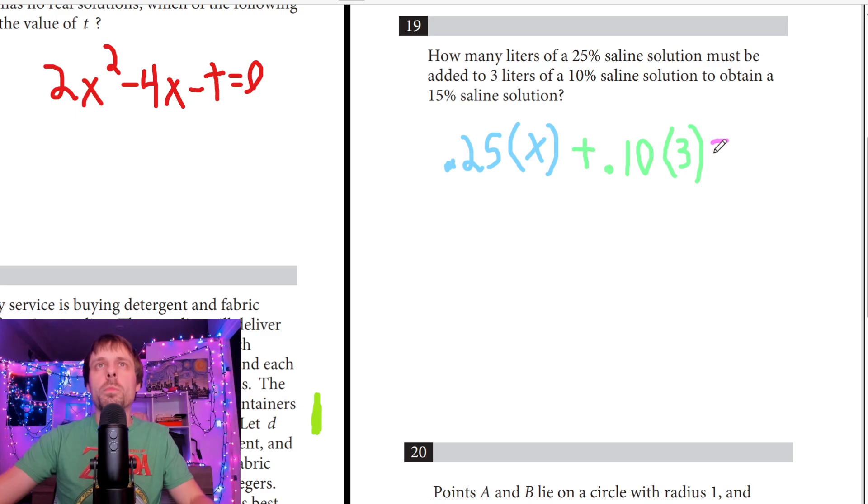And to obtain a 15% solution. So this is the tricky part. Obtain equals. But what do I put on this other side? I'm cool with 0.15, but how many liters am I going to get here? Is it three? Is it x? On the left side, we have a total of three liters and x liters. So if I'm mixing these two together by adding them, I should get x + 3 total liters. So this is a really good equation. If you can figure this one out, it's going to help you so much. One of the harder to derive equations.